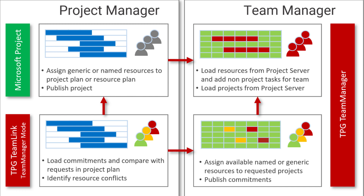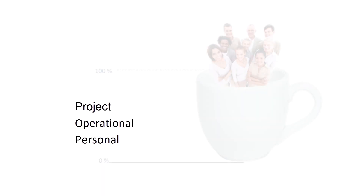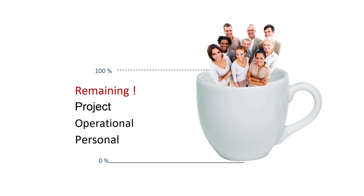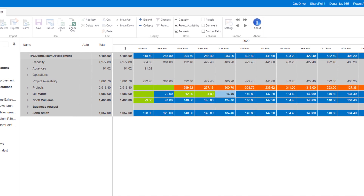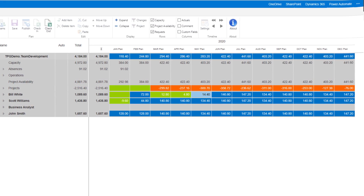By using Team Manager, functional managers can capture and analyze their respective team members' and other resource commitments towards operational, project, and/or personal activities like vacations. In making and recording such commitments, the team resource's remaining availability is automatically reduced. All this information incorporates timescale and heat map settings that make it easy to read and use.